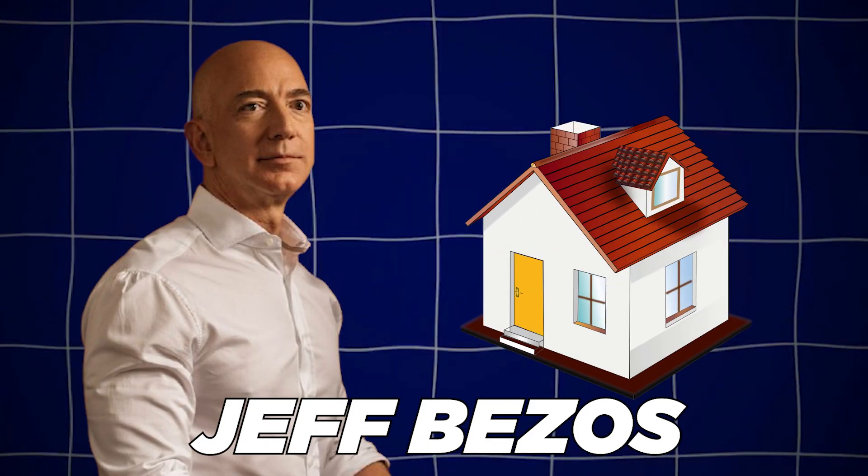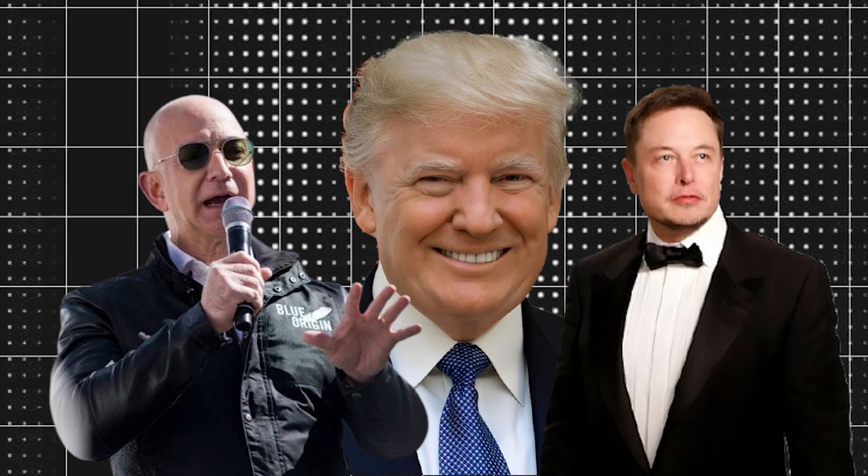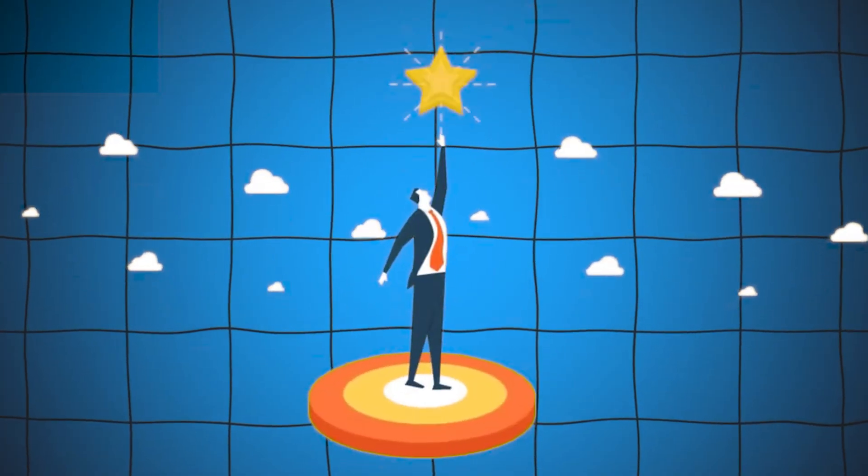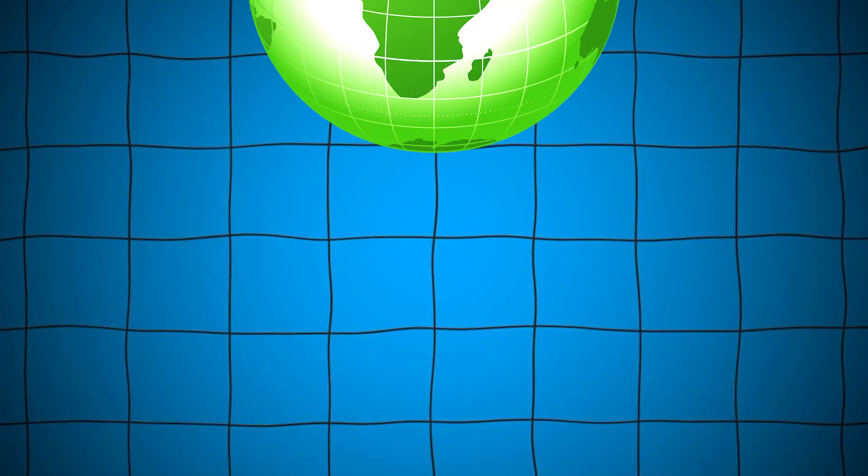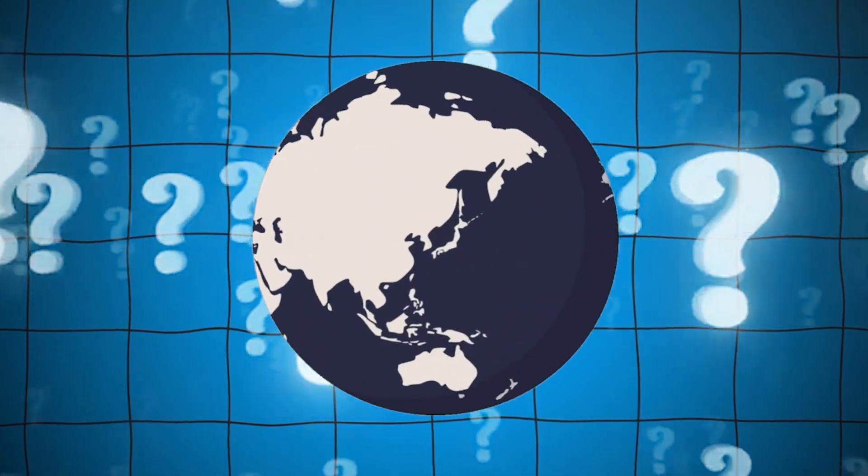Jeff Bezos wants to build colonies for a trillion people. Elon Musk wants to send a million humans to Mars. But here's the real question: Why are billionaires so eager to leave Earth? Is it a grand vision of the future, or are they simply looking for an escape? With the world changing rapidly, these tech moguls are looking to the stars. But what does this say about our future here on Earth?